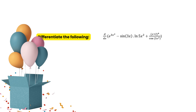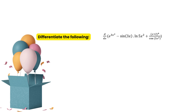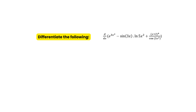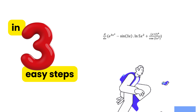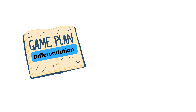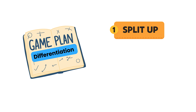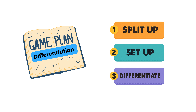Now this is where the fun really starts, but don't stress. I'm going to show you how, no matter how complex a differentiation problem looks, you can solve it in just three simple steps so you can smash it out of the park. The three steps are: step one, split up; step two, set up; step three, differentiate. Just remember it like a rhythm: split up, set up, and differentiate.